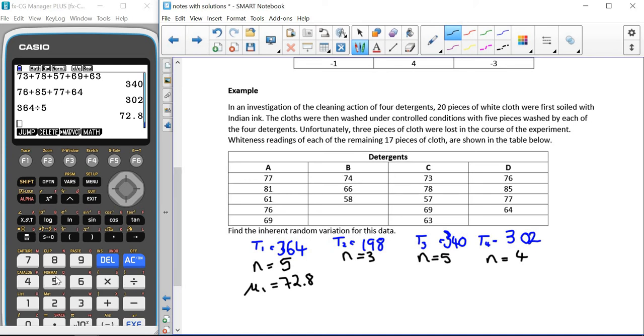Our second mean, 198 divided by three, which gives us mu2 as being 66. For the third mean, we've got 340 divided by five, which gives us 68. And for the last group, we've got 302 divided by four, which gives us 75.5.